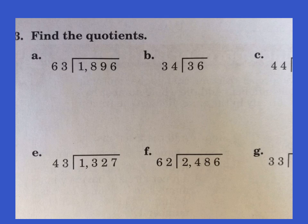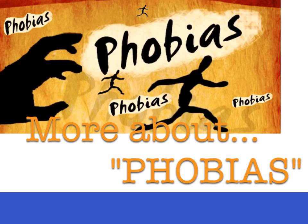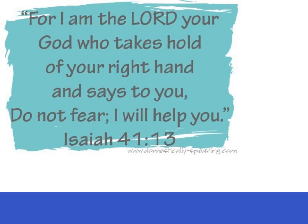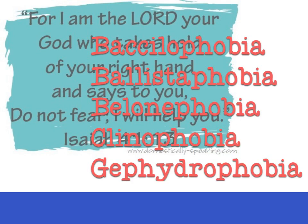This tells us to find the quotient, so I'm going to have you do these on your own. To help you get started, I want to do a little practice with phobias — the other day we learned about phobias. I'm going to give you a list of five different phobias and you'll try to match them up. Here they are: Bacalophobia, Ballistophobia, Balonephobia, Clineophobia, and Gyphrodophobia.